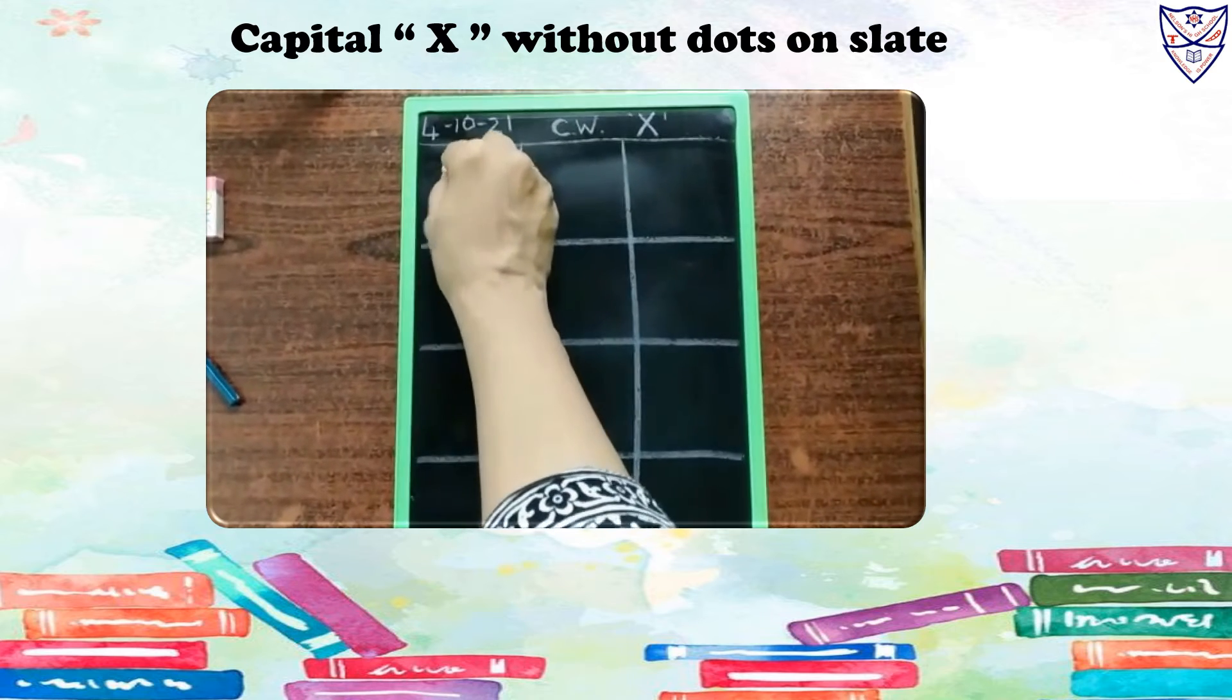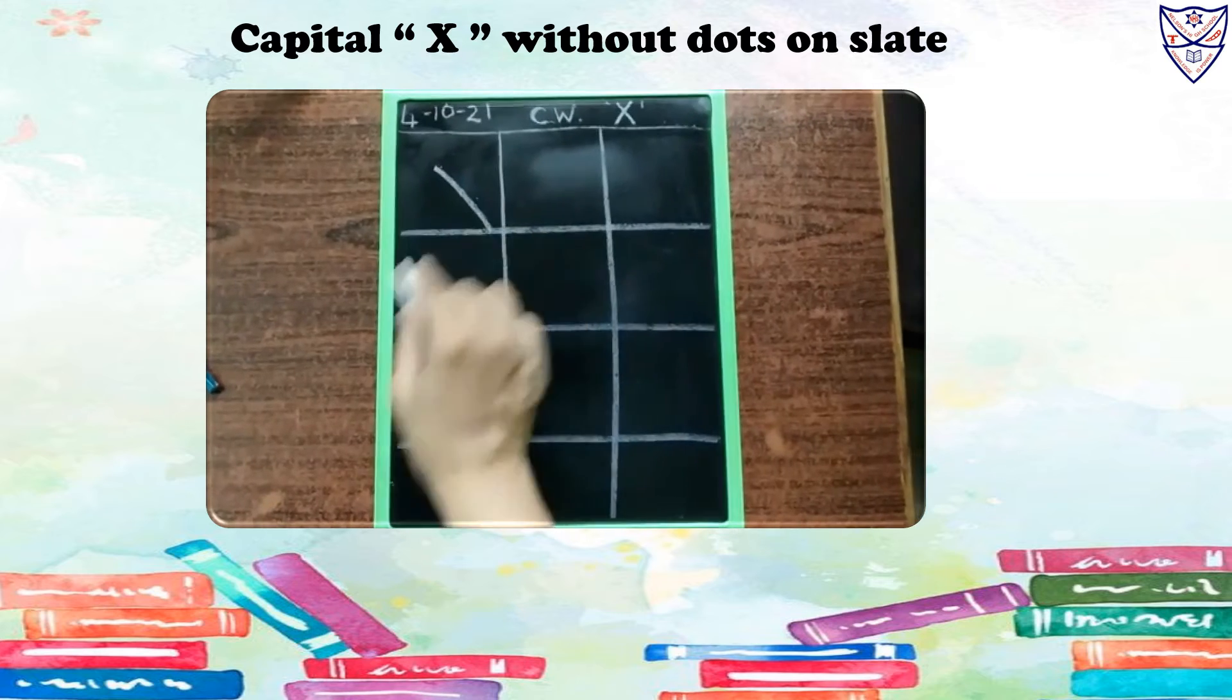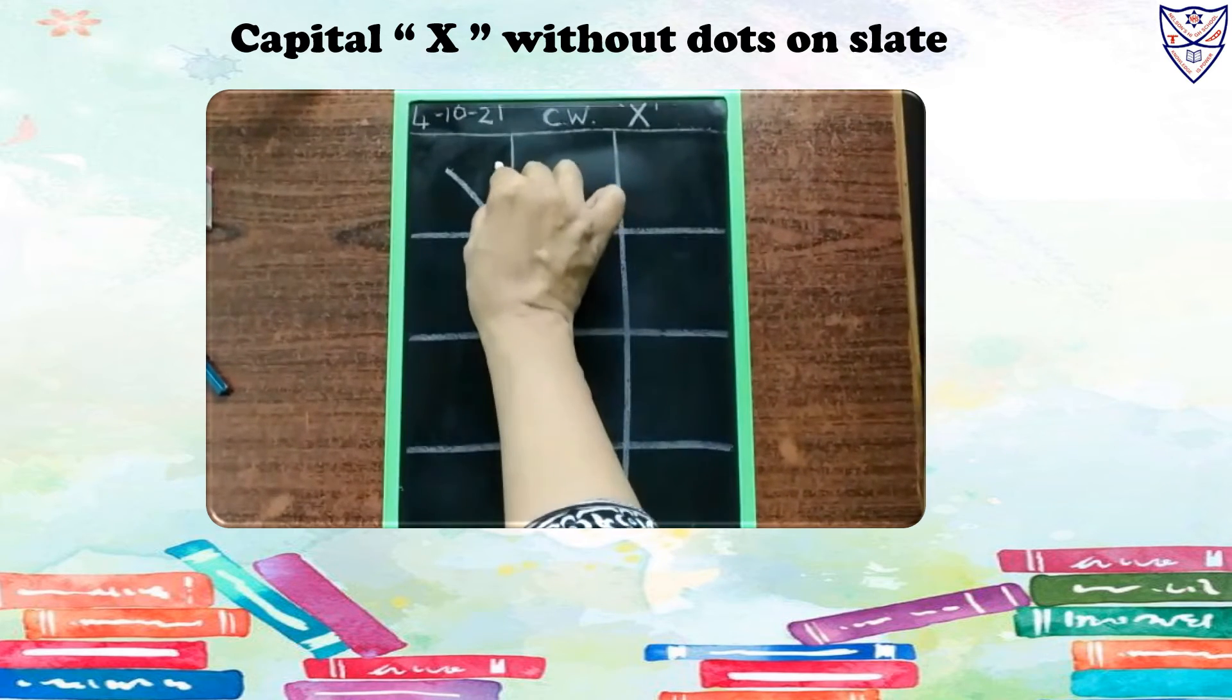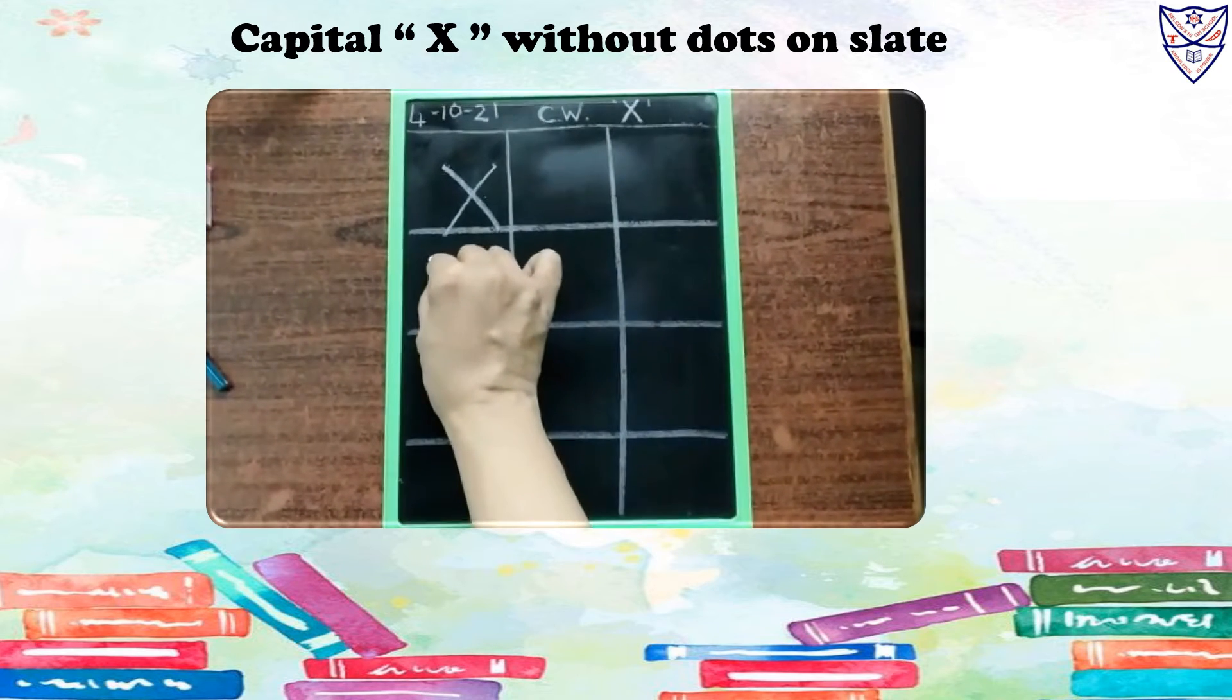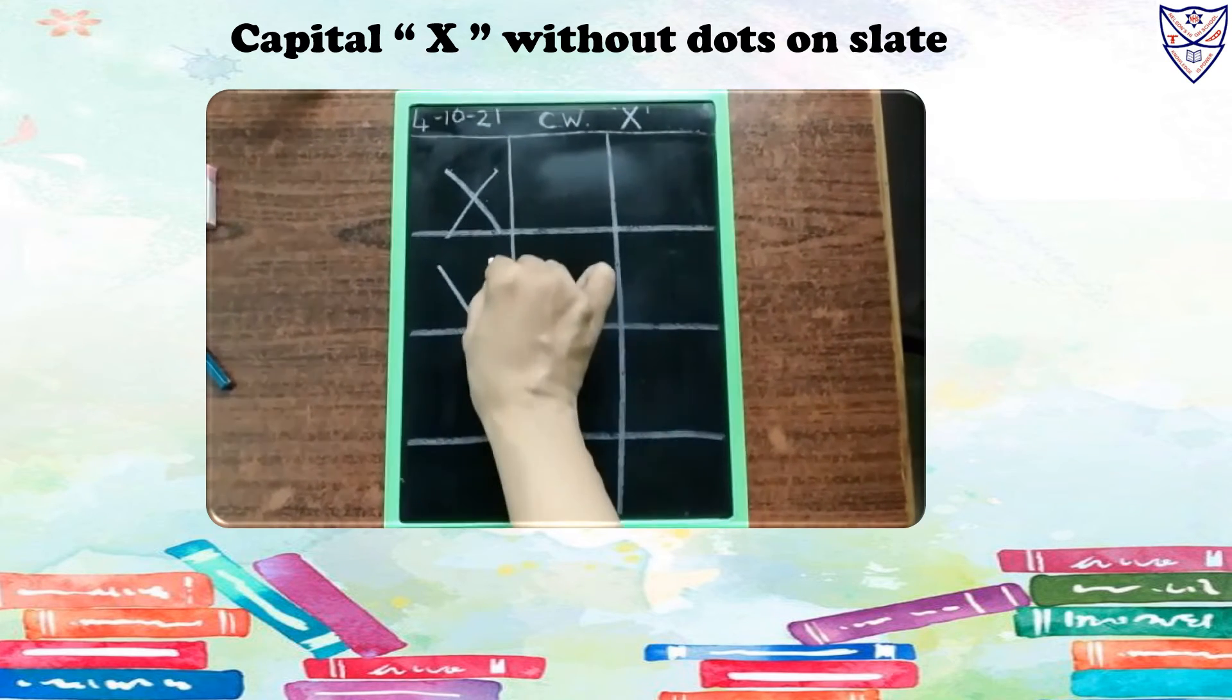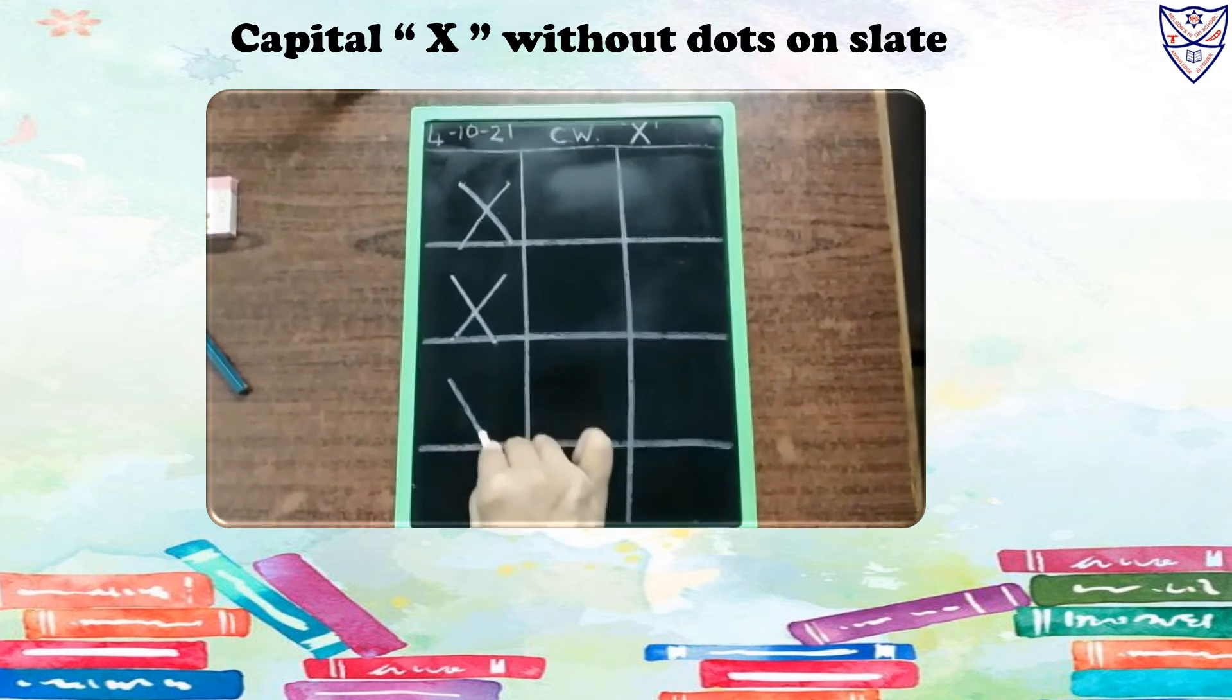Students, put your pencil in the first box and draw one slanting line at right side. Now, from this side, draw one slanting line at left side. This is your X. One slanting line at right side and one slanting line at left side. This is capital X.